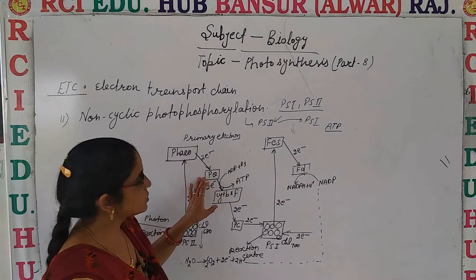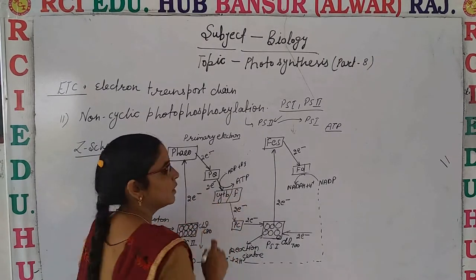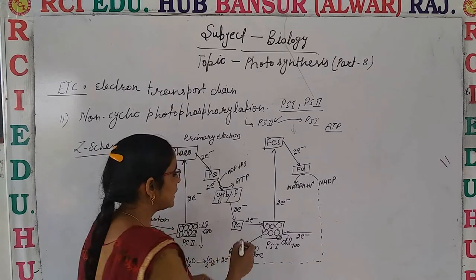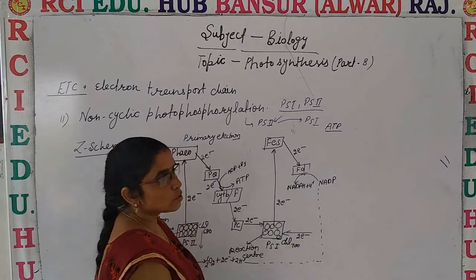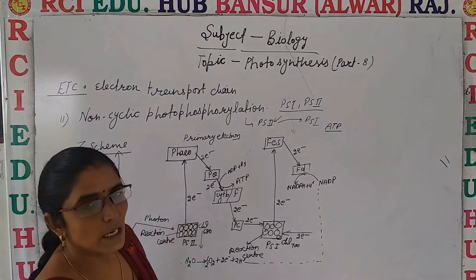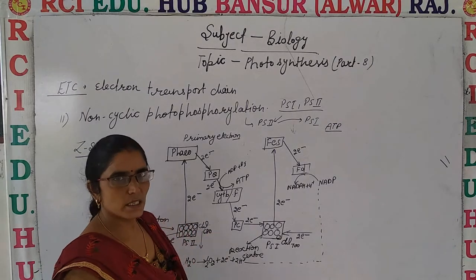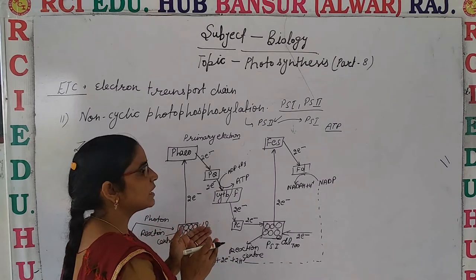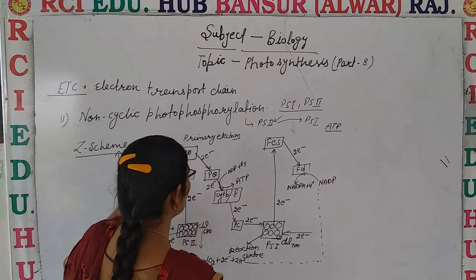After pheophytin, the electron passes to plastoquinone and then to cytochrome B6 or cytochrome F. Through this pathway it eventually enters PS1. Between plastoquinone and cytochrome B or F, formation of ATP takes place. Remember this point well — in cyclic photophosphorylation, ATP formation occurred between cytochrome B and F, whereas here in non-cyclic, it occurs between plastoquinone and cytochrome B or F.